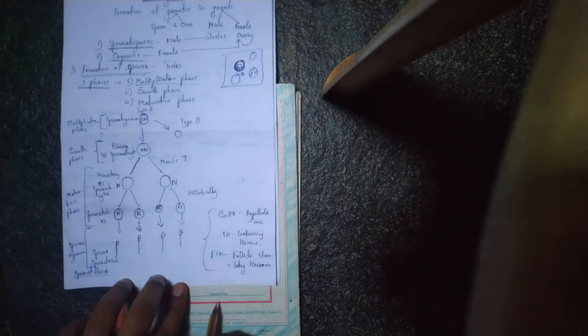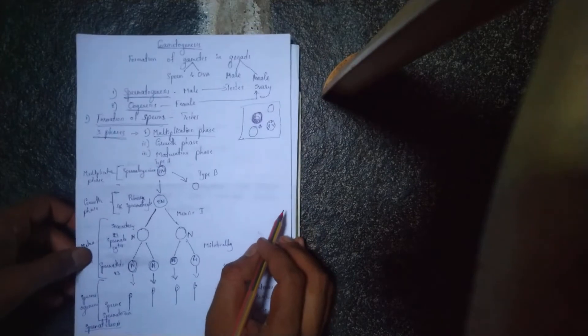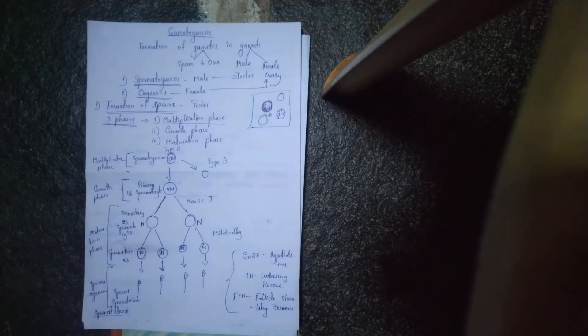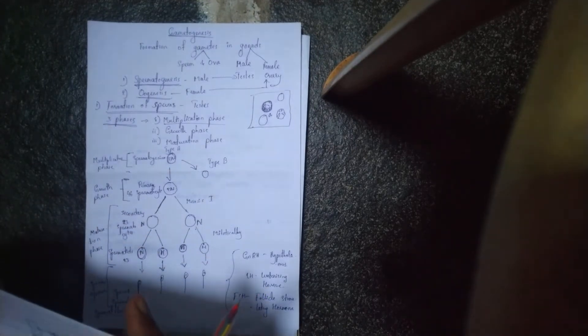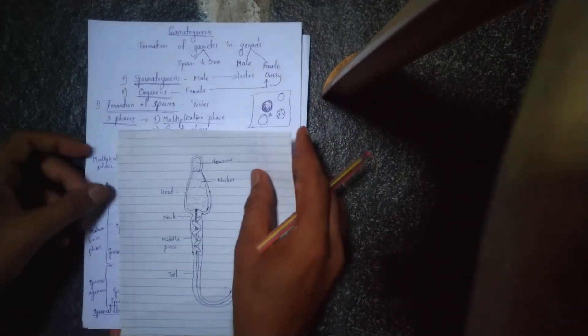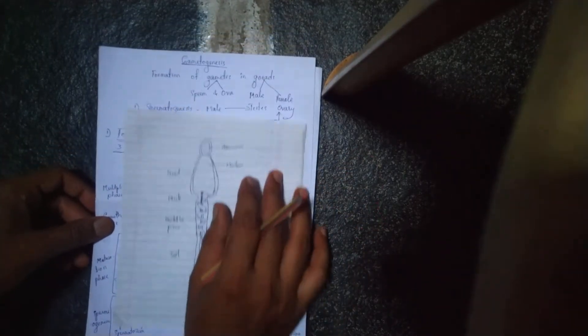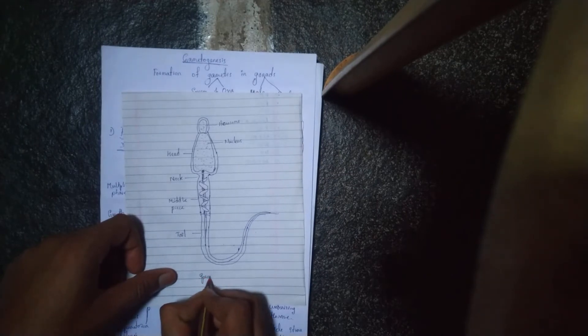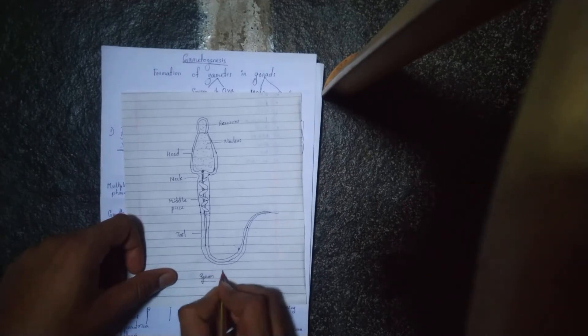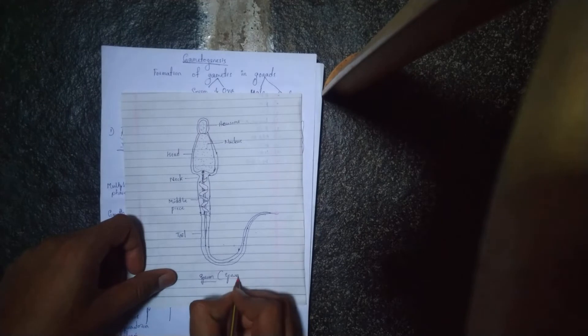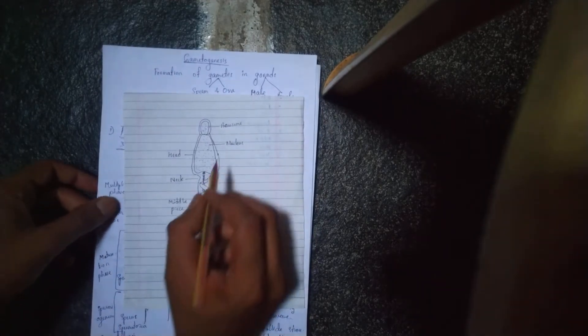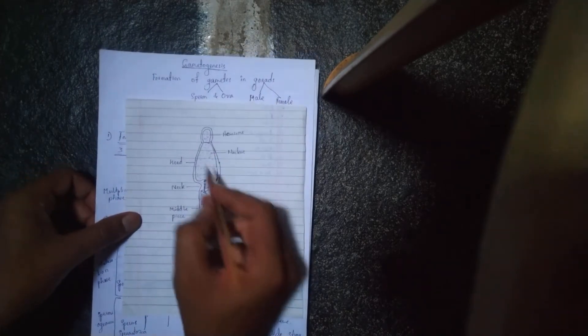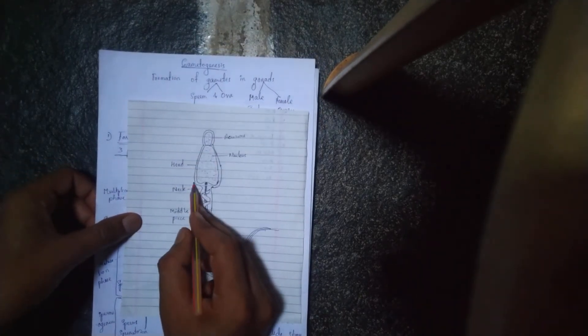Now we are going to discuss the structure of the mature sperm or spermatozoa. This is the structure of the sperm or spermatozoa. The sperm has three parts: the first part is the head, then the neck and middle piece, and the elongated tail.